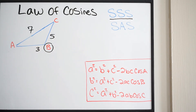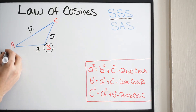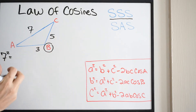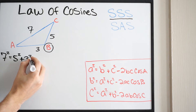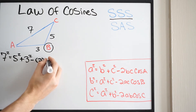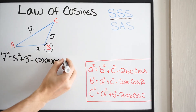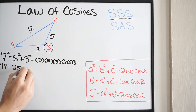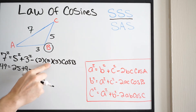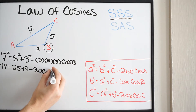So let's go ahead and plug this in to solve for angle B. Side b is 7, so we have 7 squared equal to — side a is 5, so 5 squared — plus side c, which is 3 squared, minus 2 times a times c, so 2 times 5 times 3, and cosine of B. Cleaning this up: 49 equals 25 plus 9, and 2 times 5 is 10, times 3 gives us 30. So we get 49 equals 34 minus 30 cosine B.